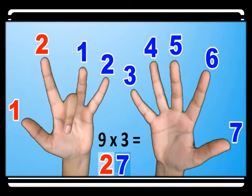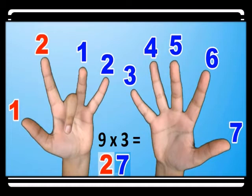For nine times three, you count one, two, three — bend the third finger. You have two before the bent finger and seven after the bent finger, so the answer is twenty-seven.